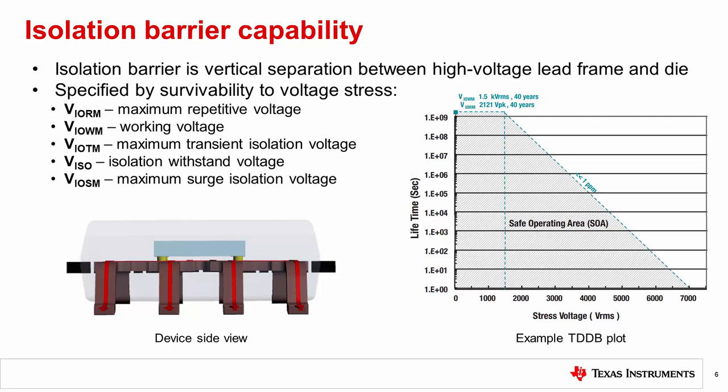For in-package magnetic current sensors, the isolation barrier is typically a very narrow gap between the lead frame and the sensor IC that is often determined by the quality of the assembly manufacturing process. High voltage isolation performance of an isolator is given at the component level by parameters including maximum repetitive peak voltage, VIORM, working voltage, VIOWM, maximum transient isolation voltage, VIOTM, isolation withstand voltage, VISO, and maximum surge isolation voltage, VIOSM.